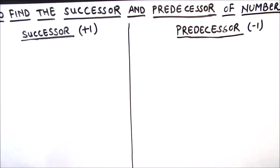Hello students, in this video we are going to learn how to find the successor and predecessor of different kinds of numbers. The numbers included are natural numbers, rational numbers, and integers. We will be solving examples of each category to clarify the topic.